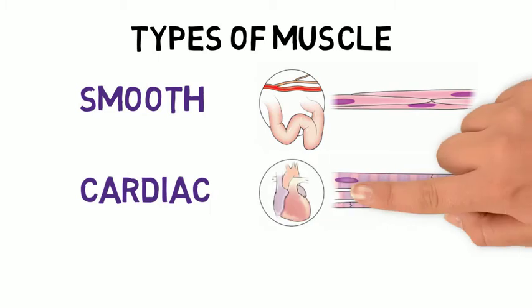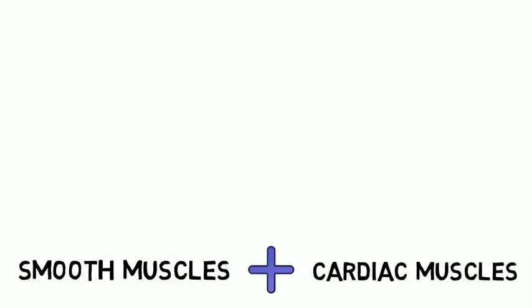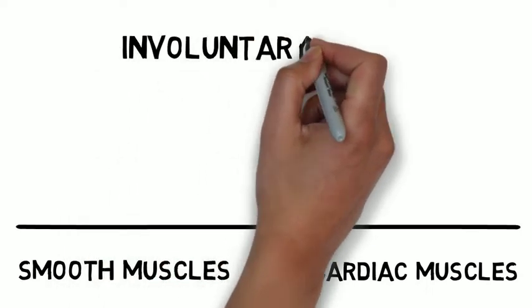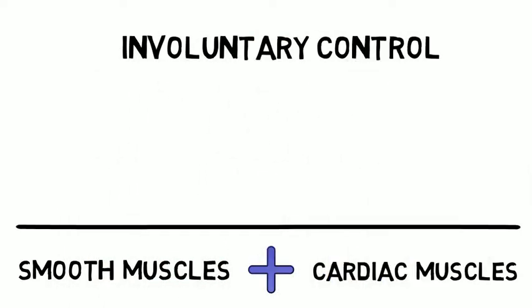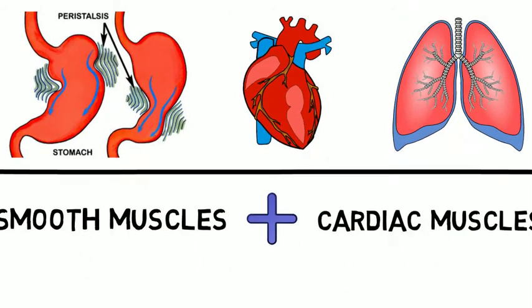Smooth muscle, cardiac muscle, and skeletal muscle. Smooth muscle and cardiac muscle are under involuntary control and assist in numerous vital bodily functions such as peristalsis, heartbeat, and breathing.